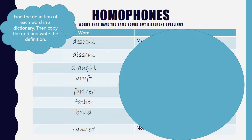Homophones. Homophones are words that have the same sound but different spellings. Further down the school you learn the most common homophones like there, to, be. But now we're in Year 6, we're looking at more challenging homophones that often are misspelled, even sometimes by adults too. We've got descent, draft, father and band. I would like you to look up the definition of each of those words, look at the different spellings, look at the definitions and then write them down. Use a dictionary to help you — if you don't have a dictionary, you can look online.